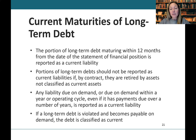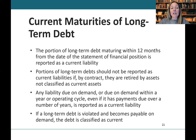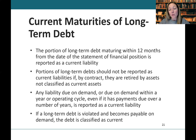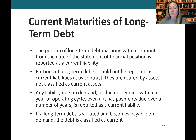The next common area is the maturity of long-term debt. The portion of long-term debt maturing within 12 months from the date of the statement of financial position is recorded as a current liability. Portions of long-term debt should not be reported as current liabilities if, by contract, they are retired by assets not classified as current assets — if you plan to use a long-term asset to satisfy it, reclassification as current is not required. Any liability due on demand within a year or operating cycle is reported as current, even if payment is structured over a number of years. Additionally, if long-term debt is violated and becomes payable on demand, that debt would also be classified as current.